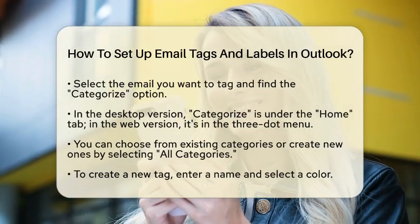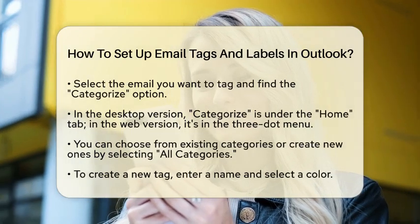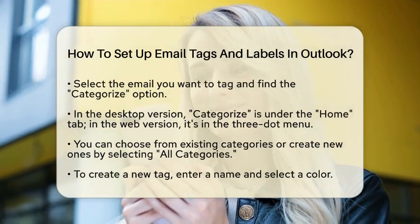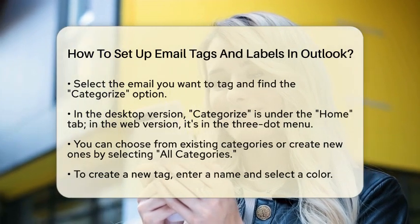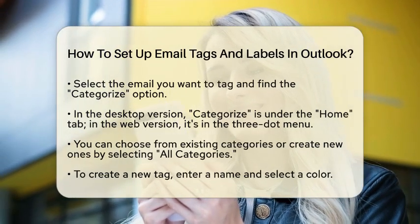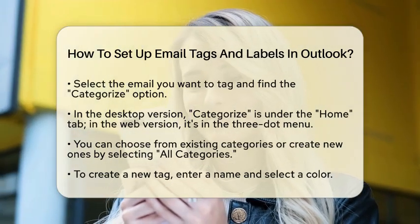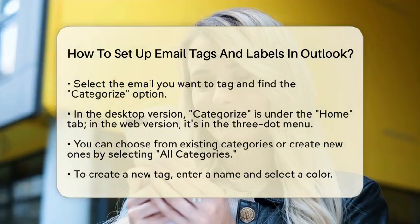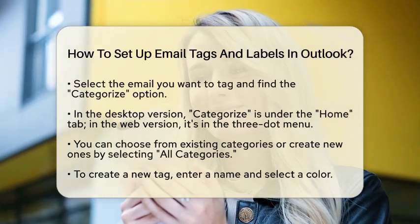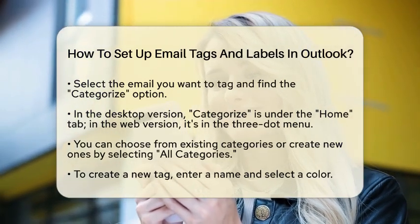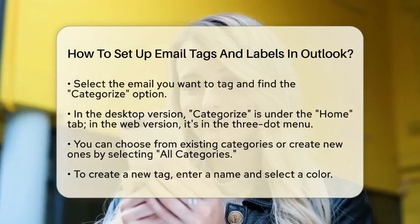Now you will see a list of existing categories. You can choose one of these or click on all categories to manage or create new ones. If you want to create a new tag, simply select New. Here, you can enter a name for your tag and choose a color that represents it. Once you have your category set up, assign it to the selected email or emails.